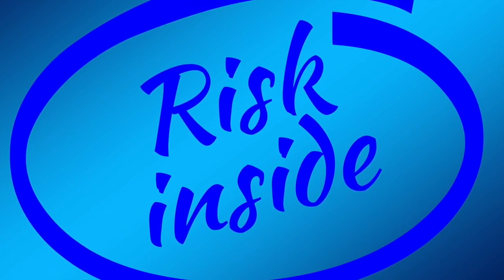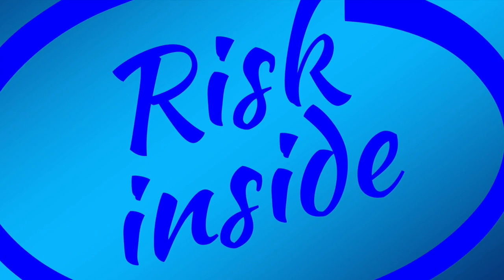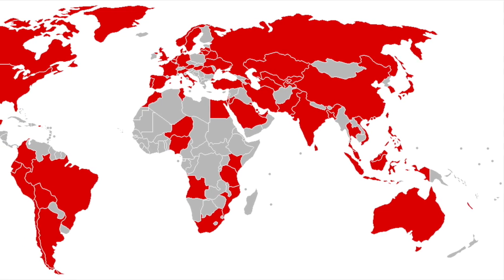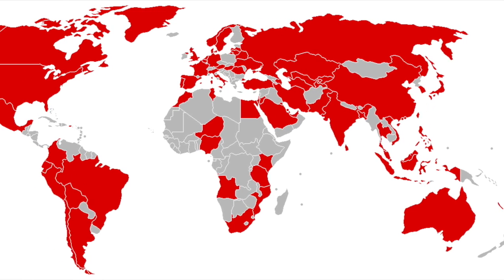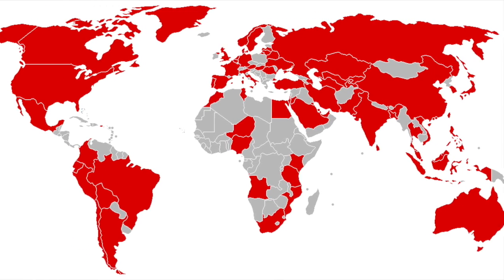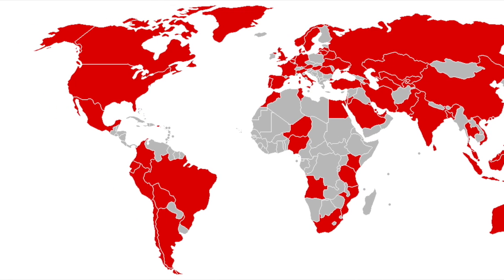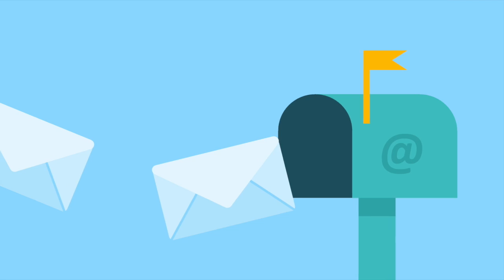Security was not built into the Internet by default. By 1988, the Internet had branched out internationally, and commercial email services were available.